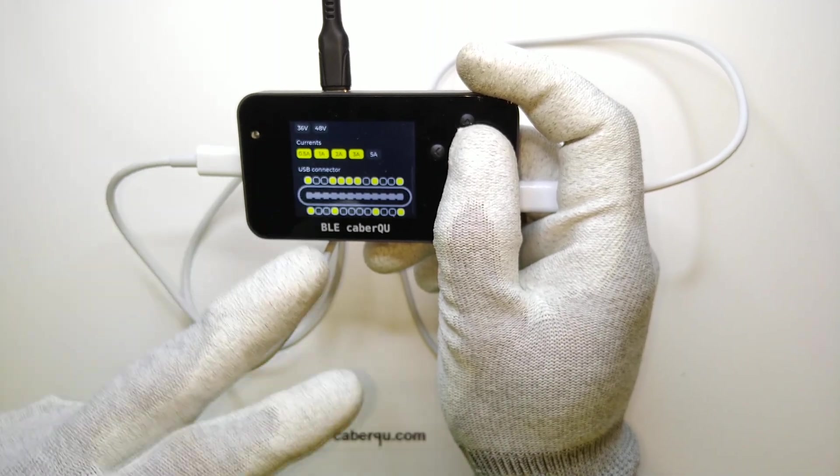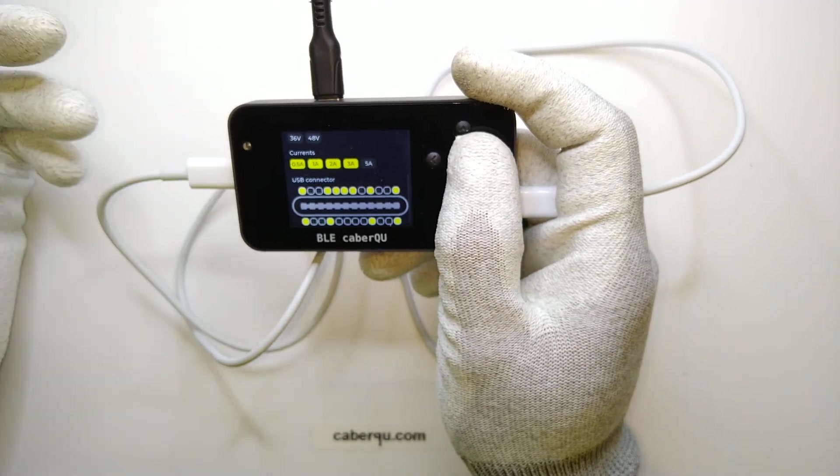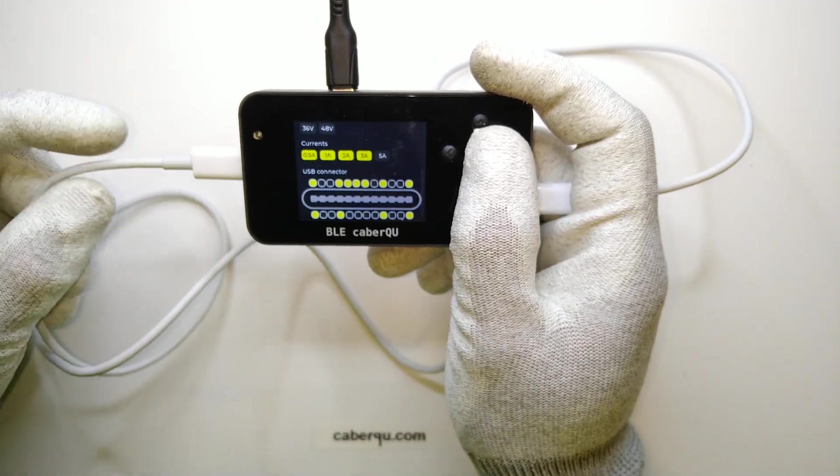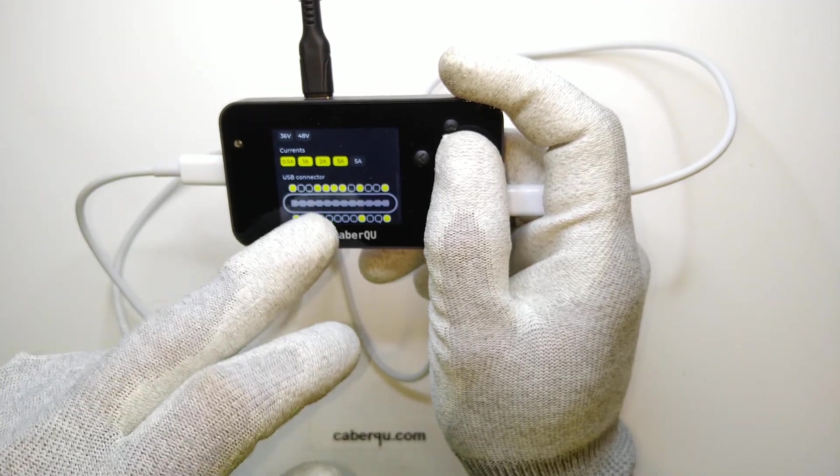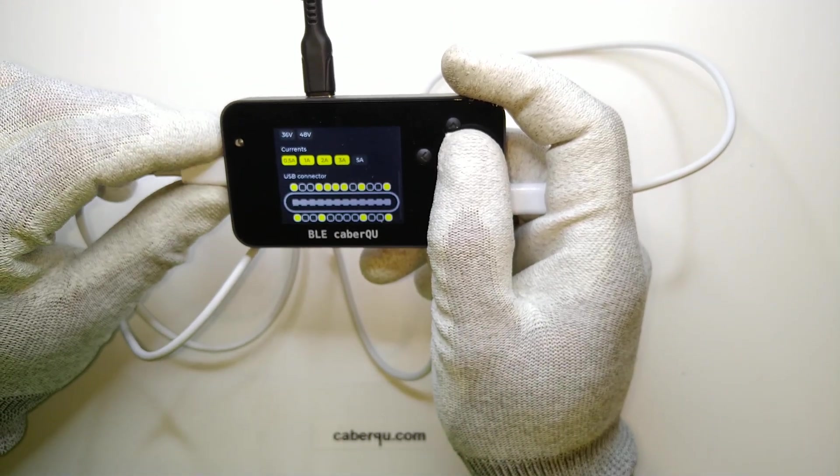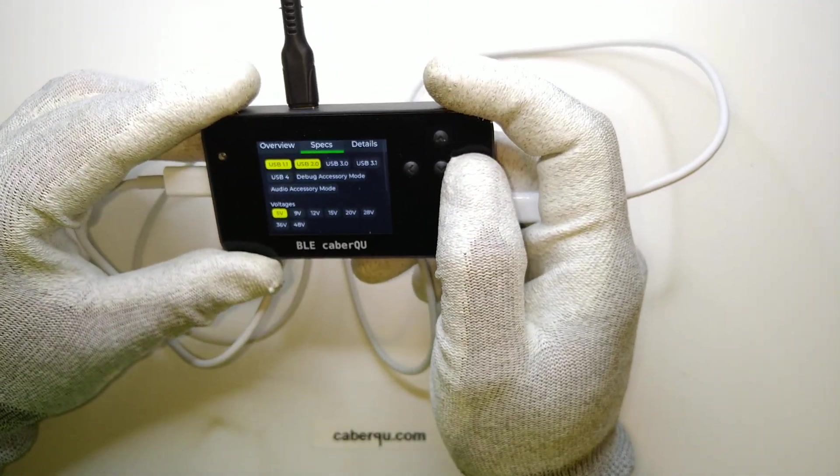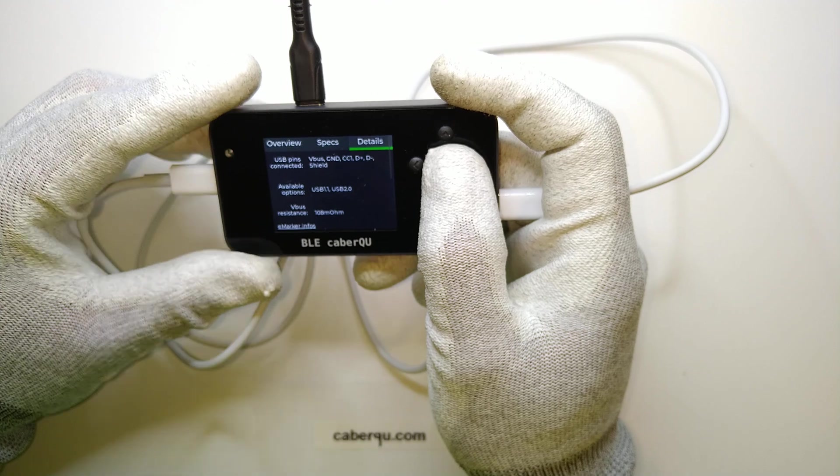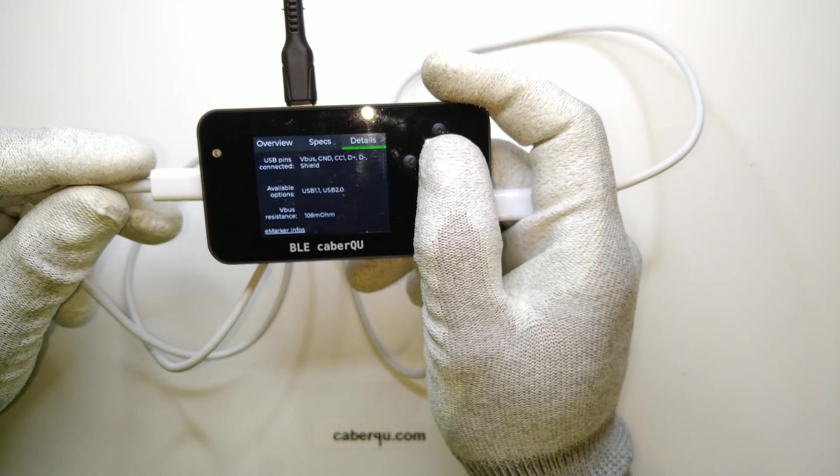Interestingly enough, the connector is pretty much assembled in the same way, so it may even have dropped out of the same machine in the factory itself. They also only use one of the CC pins instead of two, so they actually only implement the bare minimum. The VBUS resistance in this case is even higher at 108 milliohms.